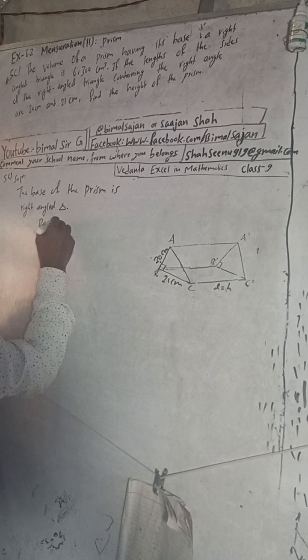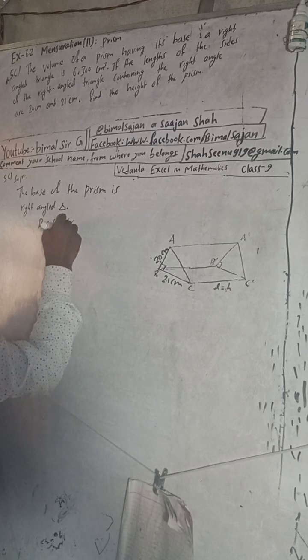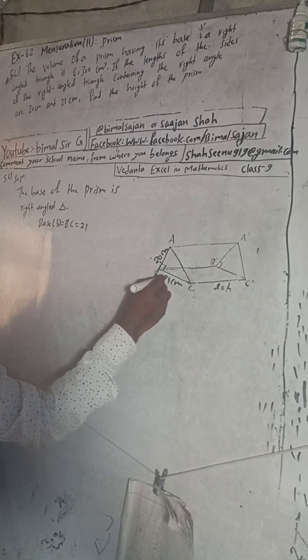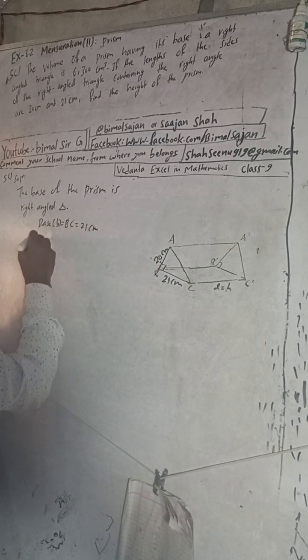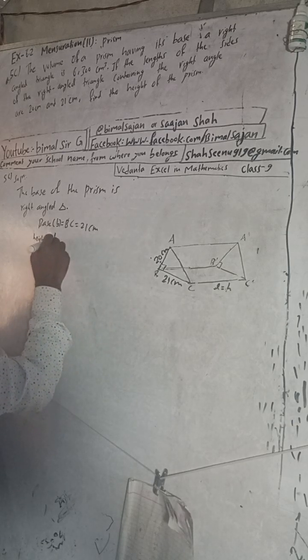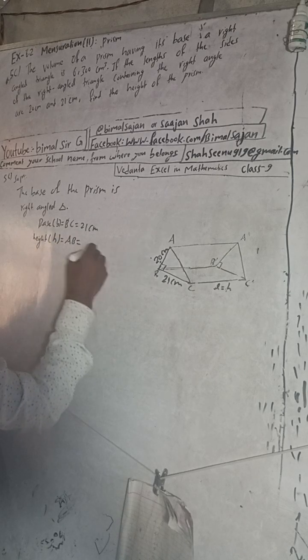This base B is equal to what? BC. BC is equal to 21 cm. And height - that is height, what is height? AB. AB is equal to 20 cm.